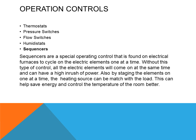Sequencers are special operating controls found on electric furnaces to cycle the electric elements on one at a time. Without this type of control, all the electric elements will come on at the same time and can cause a high inrush of power. By staging the elements on one at a time, the heating source can be matched to the load, which can help save energy and control the temperature of a room better.